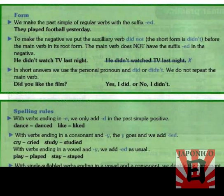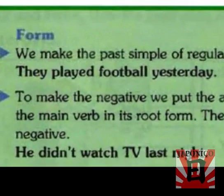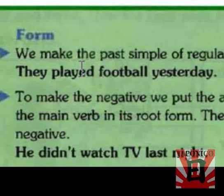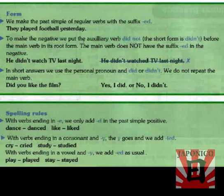Now we're going to explain the grammar and the use. The form: we make the past simple of regular verbs with the suffix -ed. For example, 'They played football yesterday.' The verb 'play' — we simply add the suffix -ed and it becomes past tense with regular verbs. To make the negative, we put the auxiliary verb 'did not' — short form 'didn't' — before the main verb in its root form. The main verb does not have the suffix -ed in the negative.